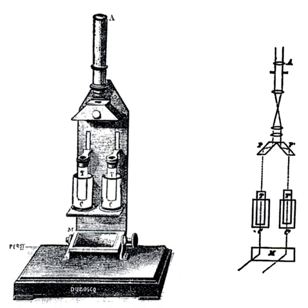An absorption colorimeter is a device used to test the concentration of a solution by measuring its absorbance of a specific wavelength of light. To use this device, different solutions must be made, and a control — usually a mixture of distilled water and another solution — is first filled into a cuvette and placed inside a colorimeter to calibrate the machine. Only after the device has been calibrated can you use it to find the densities and/or concentrations of the other solutions.